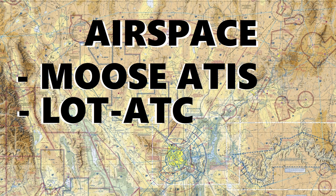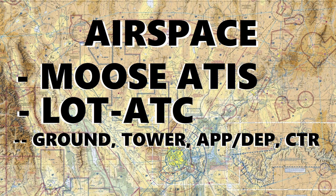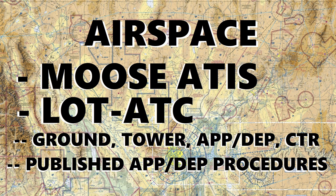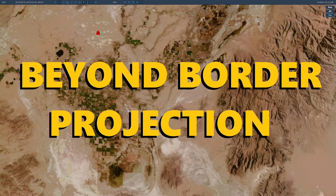We use MOOSE ATIS to get our information when leaving the terminal and returning, and we use Lot ATC. Even if someone flying in the package is an air traffic controller, they'll suit up, run us through some Lot ATC, then join us in the air. We'll typically check in with ground, hand over to tower, then approach and departure, and center if needed. We use published approach and departure procedures from available navigation aids, but we keep it to just a couple of key ones so non-real-world pilots can still have fun rather than learning every VFR and IFR approach into Las Vegas.